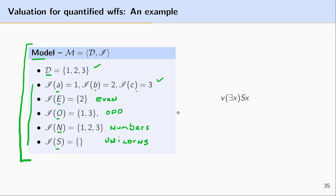Next, let's look at EXSX — there is at least one item X that is in the interpretation of S. To check whether this is true or false, we simply look to see if there is at least one item in the domain that is in the interpretation of S. We see that there is not. In the domain of numbers one, two, and three, there aren't any items in the interpretation of S — the unicorns. So the truth value of EXSX is false.